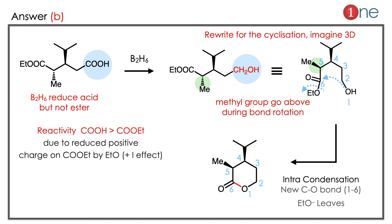A new C–O bond formation occurs and EtO leaves. Here you have to learn two things. One is the selectivity of B2H6: B2H6 prefers COOH over COOEt. Second, when you bend the molecule you have to carefully adjust the stereochemistry. Rotation of a single bond is not a problem, but stereochemistry is the key issue here.